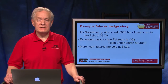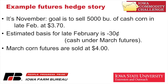Let's do an example story. It's November, right after harvest, and we've got 5,000 bushels of cash corn that we want to sell at a goal of $3.70. We estimate basis for late February, when we want to come out of storage and sell those bushels, to be $0.30 under. And we look at March corn futures out at $4.00. So that's the setup for this storage hedge story.